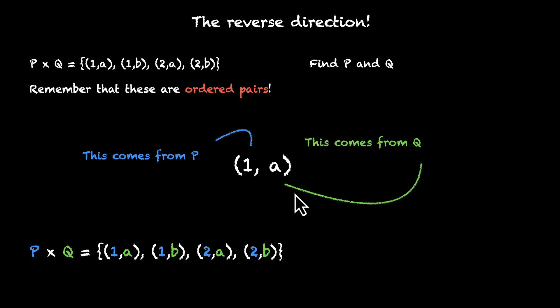So let's color code them. If all the first elements are coming from P, to figure out what P is, let's only look at the first elements. The first elements are 1, 1, 2 and 2. So P is actually 1 and 2. Because there is nothing else that we can see, we can say that P has to be {1, 2}.